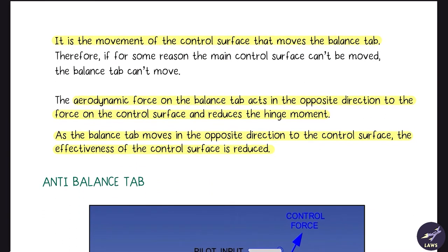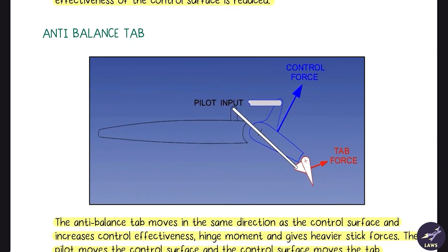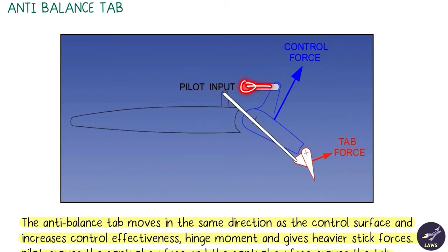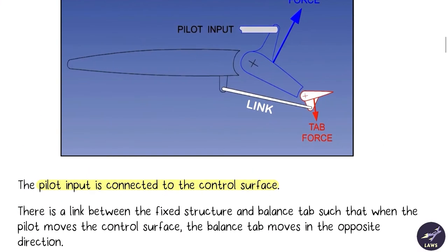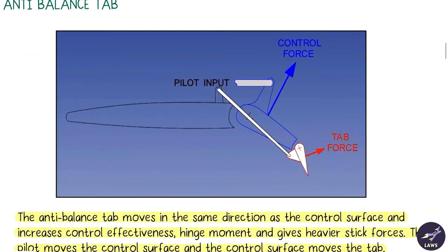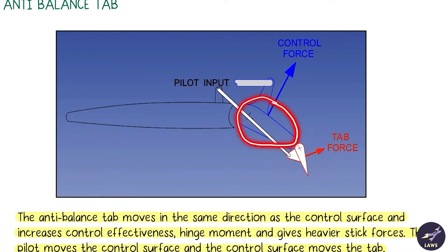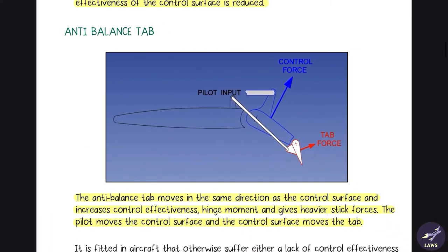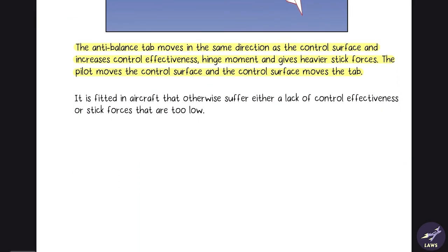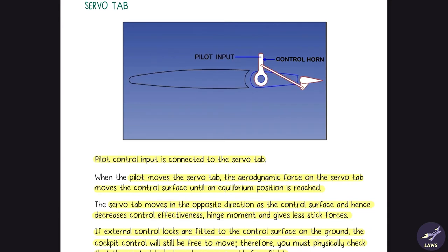Since the balance tab moves in the opposite direction, the effectiveness of the control surface is reduced. The anti-balance tab is the opposite — the pilot input is directly connected to the control surface, but the link causes the tab to move in the same direction as the control surface, increasing the hinge moment and giving the pilot more feel or stick force. It is fitted on aircraft that suffer from a lack of control effectiveness or where stick forces are too low.